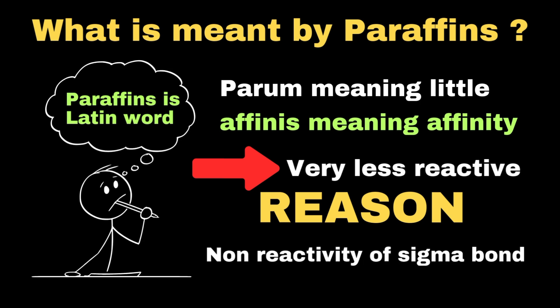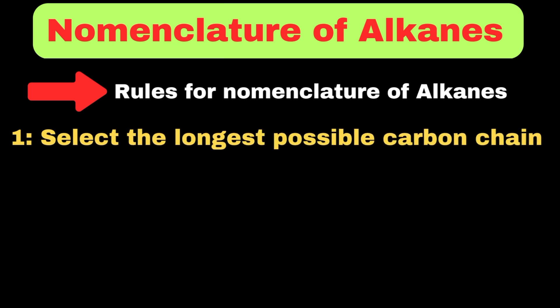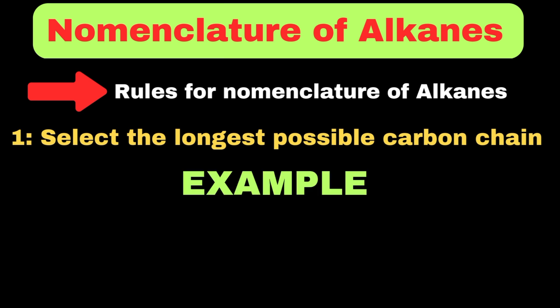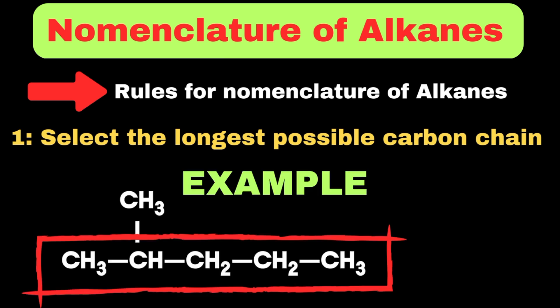Let's move towards the nomenclature of alkanes. The first and most important rule is that we have to select the longest possible carbon chain, which will give the parent name to the alkane. Since the longest possible chain has five carbons in the example structure, we need to select it.